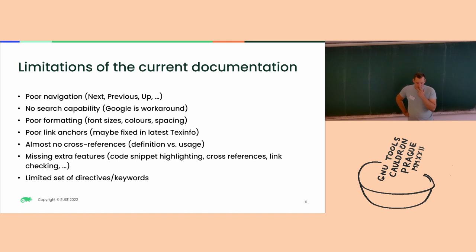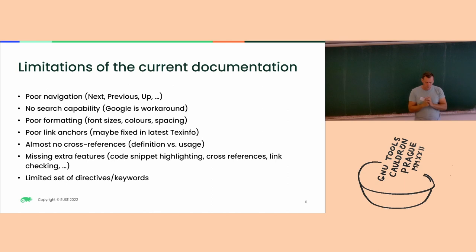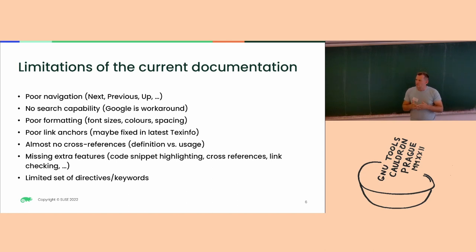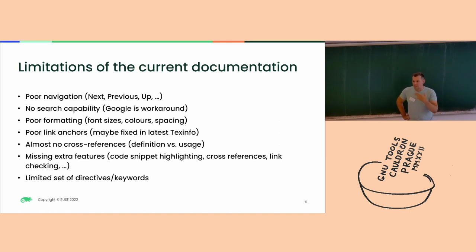Summarizing the limitations of the current texinfo documentation: it's about navigation and search capability. The formatting is quite poor — we don't use much of the visual aspects of HTML. The link anchors are poor in terms of precise position and URL quality, as was mentioned. Missing cross-references: we use keywords for options or files, but texinfo is not doing many cross-references as shown in the case of the O2 options. Code highlighting is probably possible via some external program.